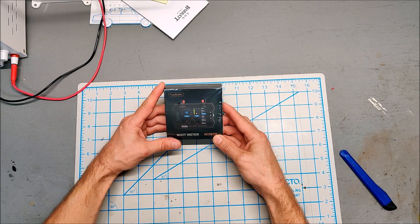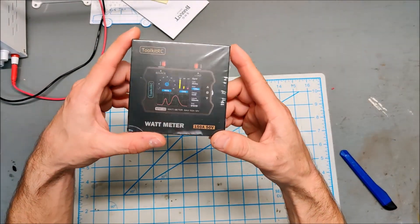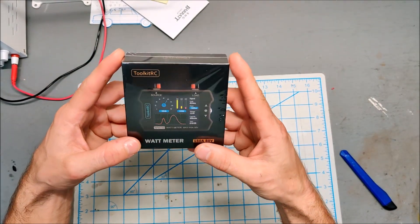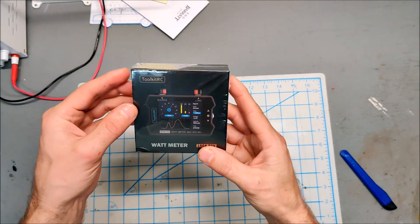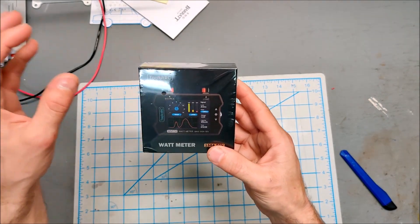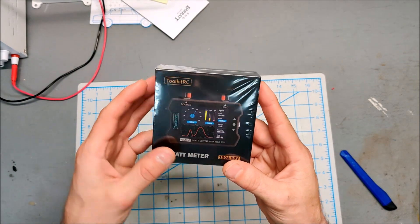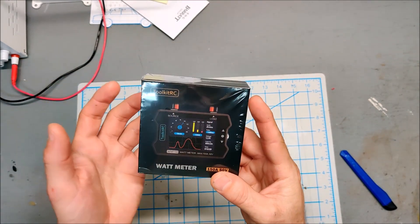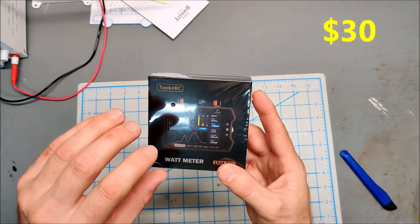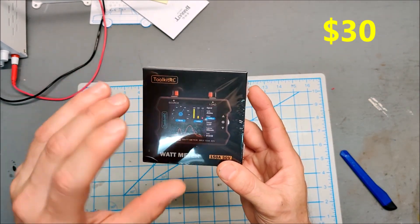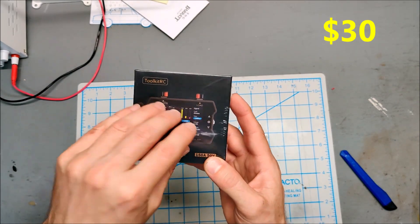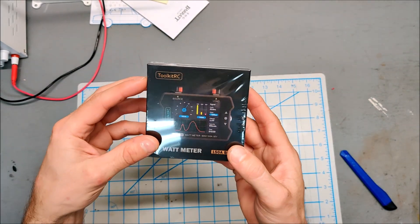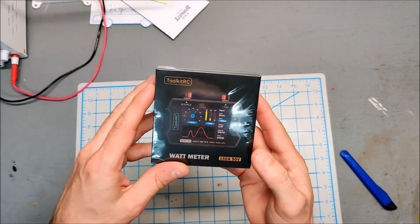So I bought another meter to test. This is the Toolkit RC watt meter and I've seen this for years on Amazon, Aliexpress, and Banggood. It's kind of expensive, I think it's like $30 or $40, but it does have a full digital LCD display and I decided it's time to test it out.